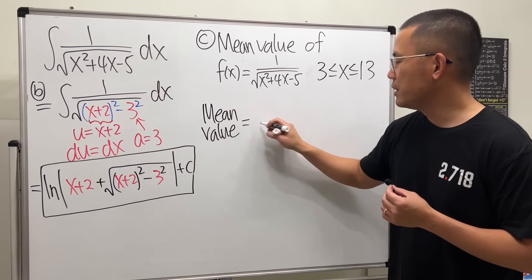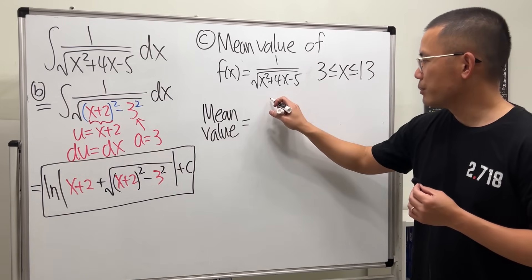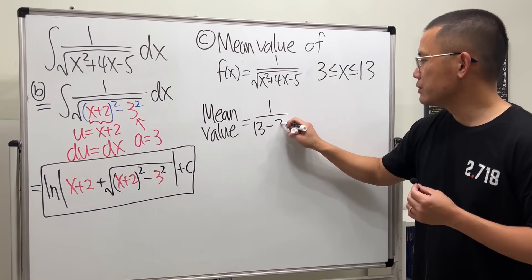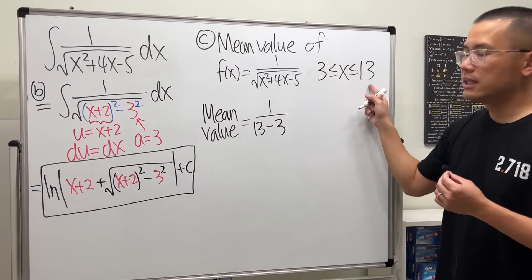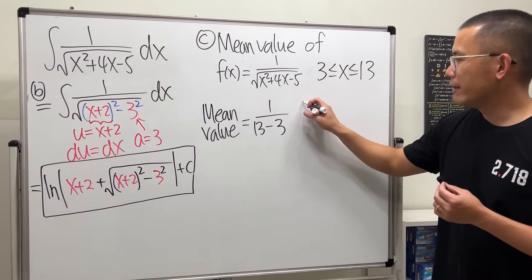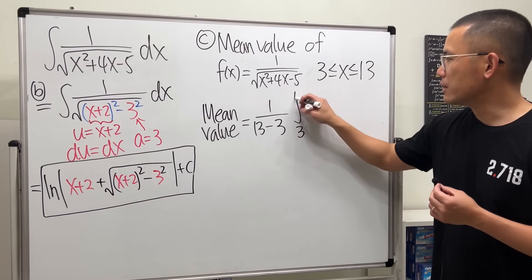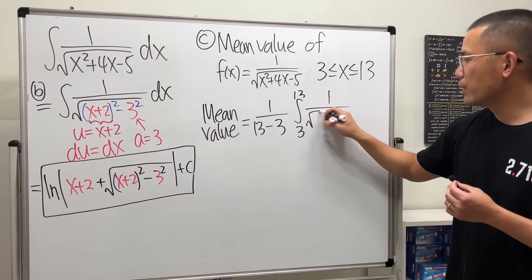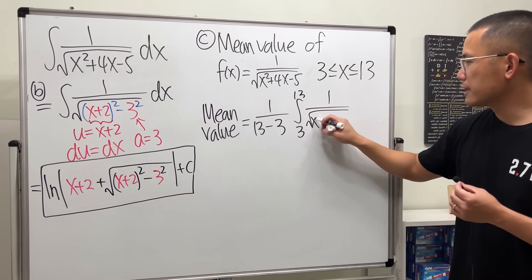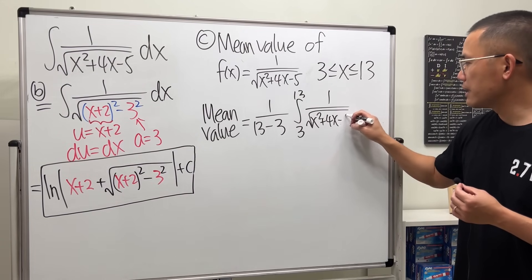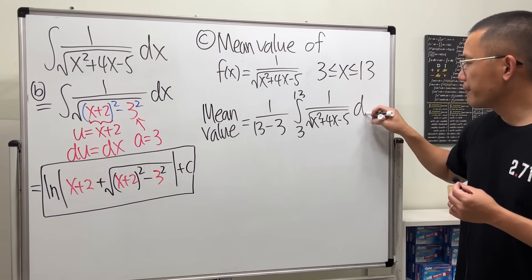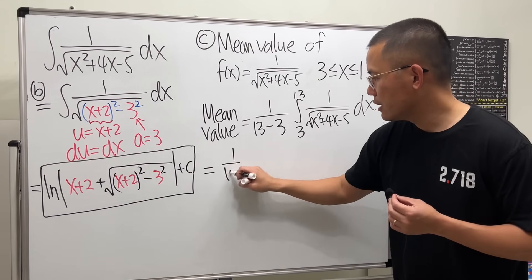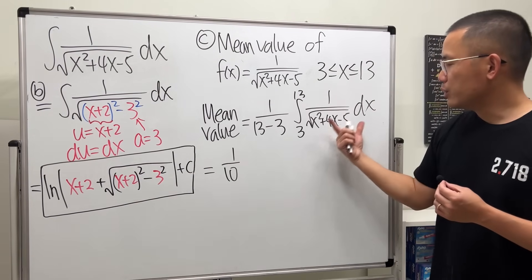The mean value is going to be: first, put down 1 over (13 − 3), because that's the length of this interval, and then integrate from 3 to 13 of the function 1 over √(x² + 4x − 5). So here we have 1 over 10.